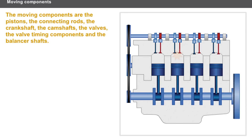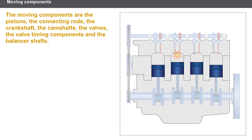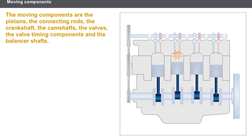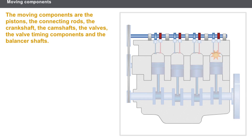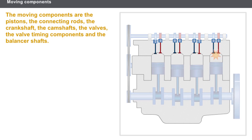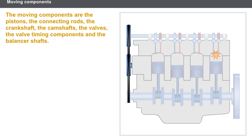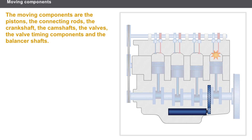The engine moving components are the following: the pistons and their rings, the connecting rods and their bearing shells, the crankshaft, the camshafts, the valves, the timing and valve timing components dephaser, and on certain engines the balancer shafts.